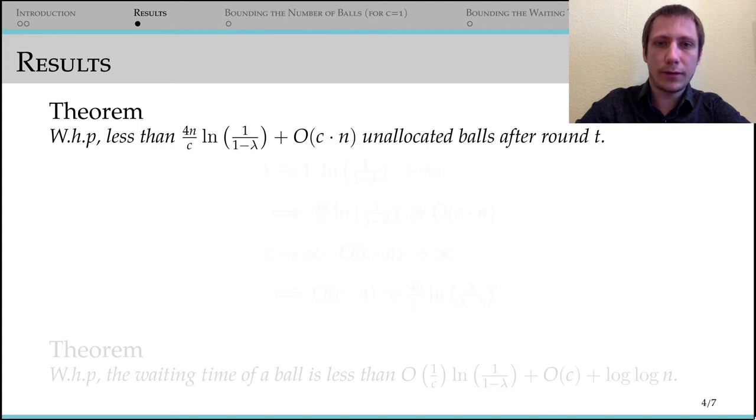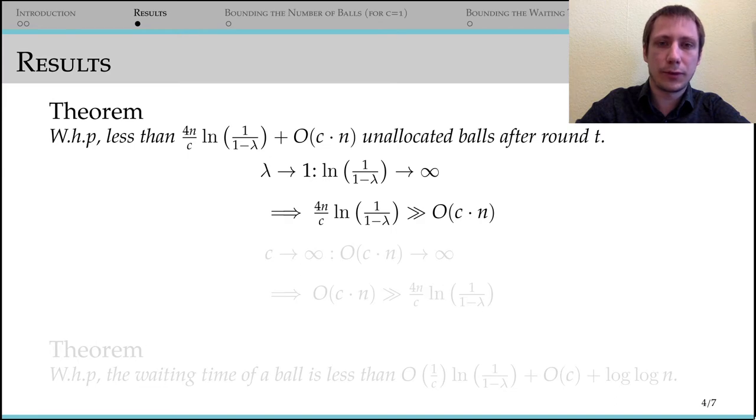With our arrival rate approaching 1, the first term increases and the second term becomes negligible. Then the number of balls is roughly inversely proportional to the capacity of the bins. However, for any fixed lambda, this approximation does not hold indefinitely. For increasing values of C, the second term dominates the first.